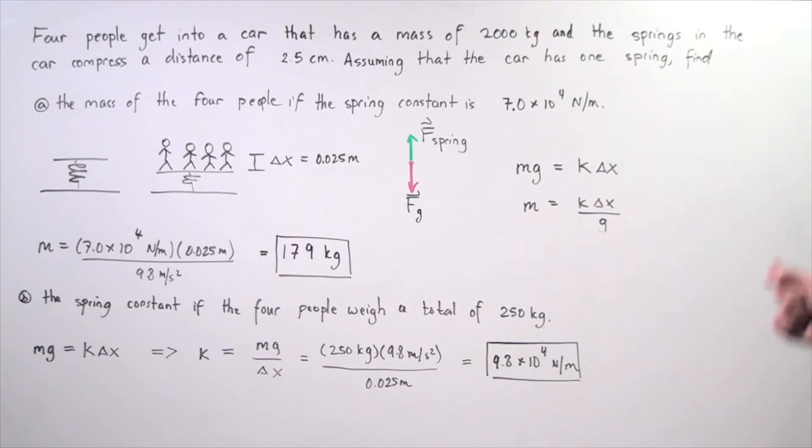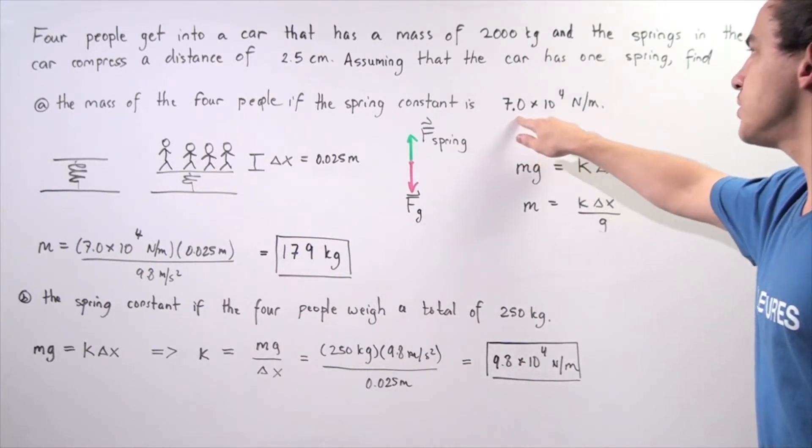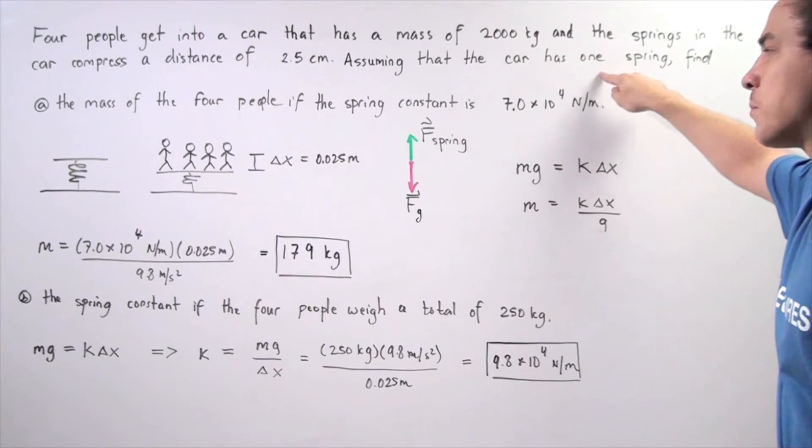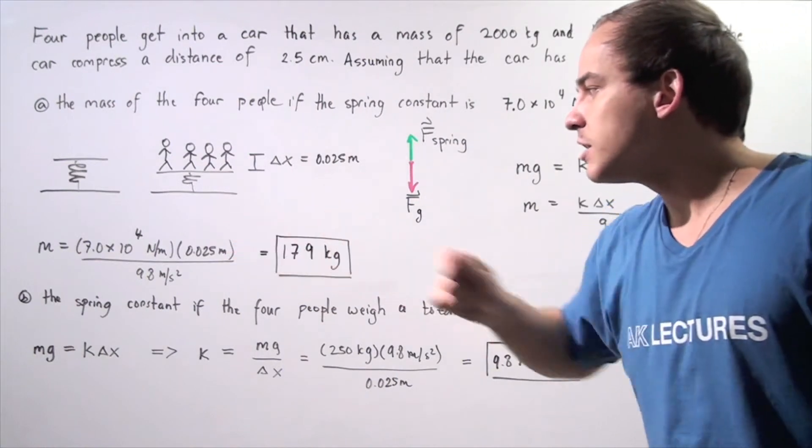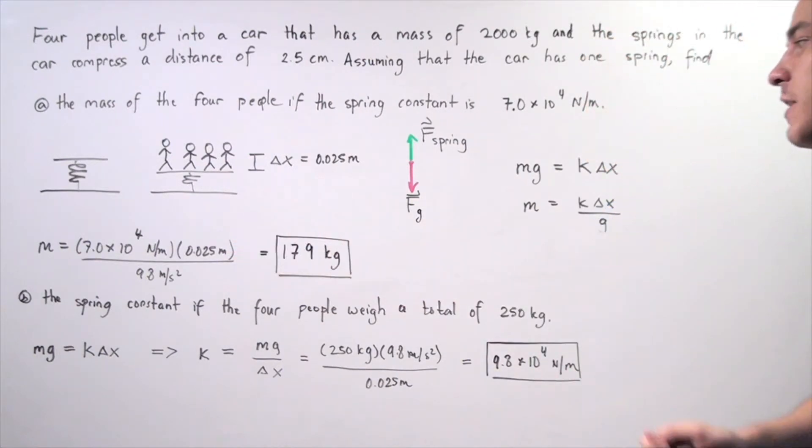Assuming that the car has one spring, find A, the mass of the four people if the spring constant is 7.0 times 10 to the 4 newtons per meter. And in part B, assuming the car has one spring constant, find the spring constant if the four people weigh a total of 250 kilograms.